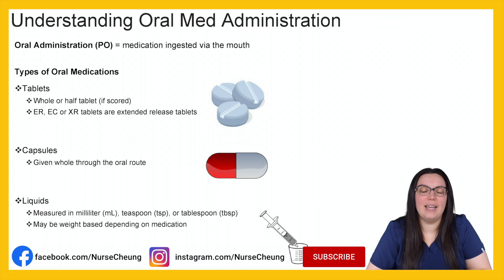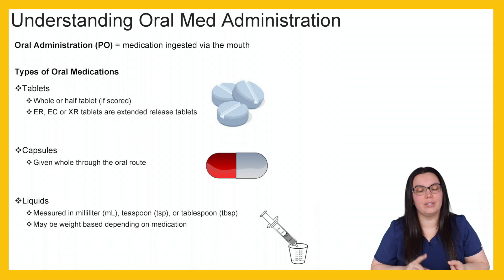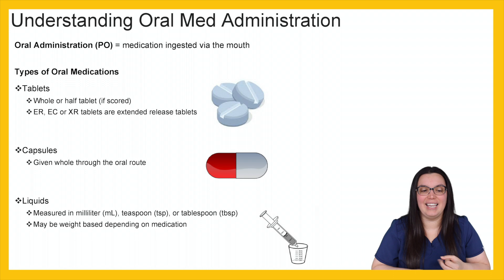Oral medication is administered via the mouth — it's ingested through the oral cavity. We have different types of oral medications: tablets, capsules, and liquids. Tablets can be whole or half tablets if they're scored, as you can see in the picture. We also have ER, EC, and XR tablets, which are considered extended release tablets.